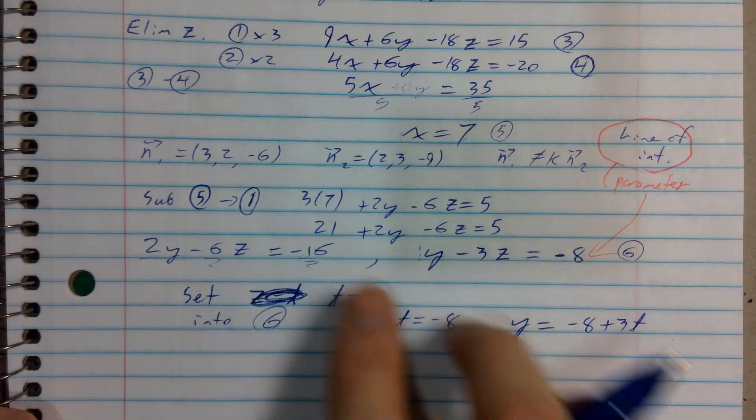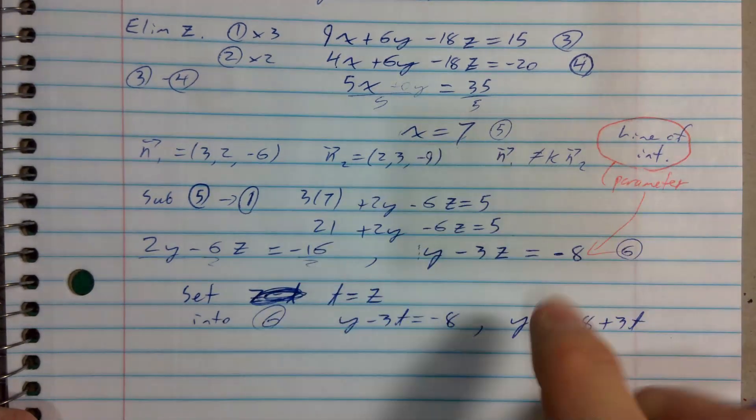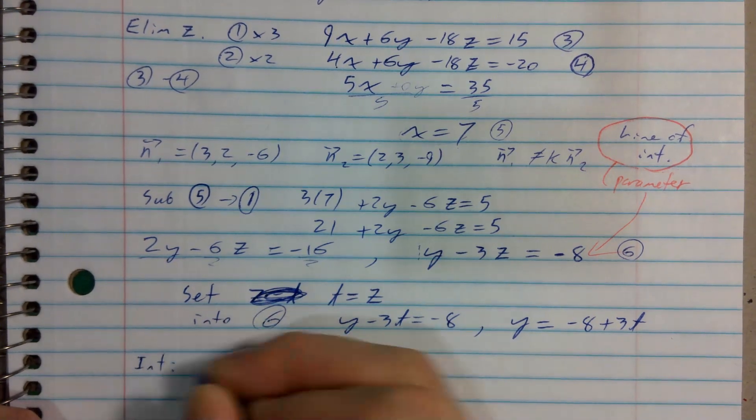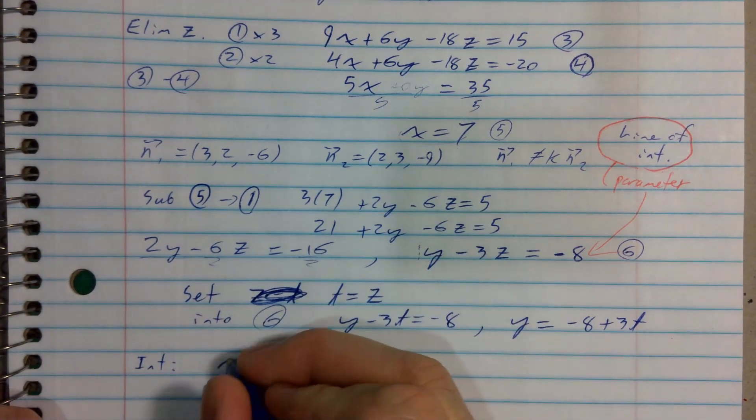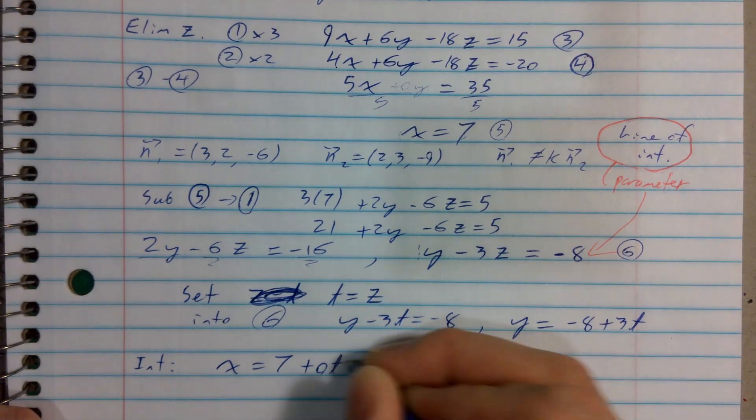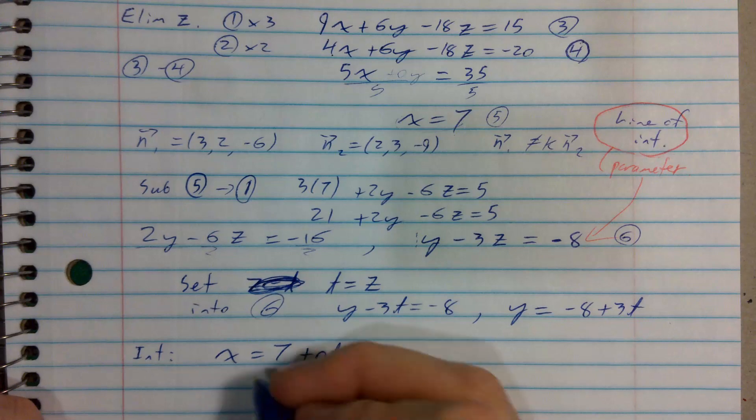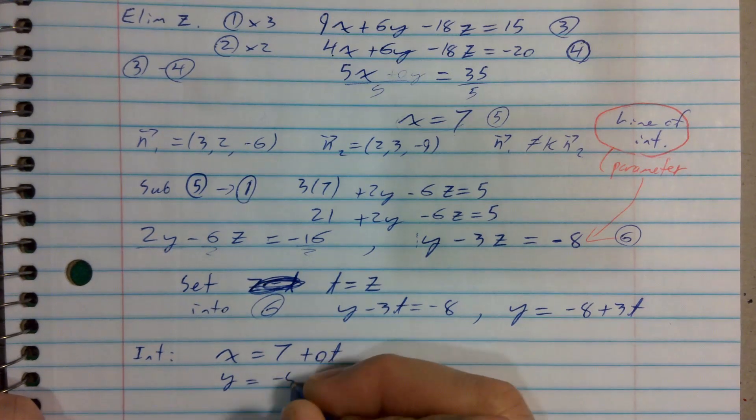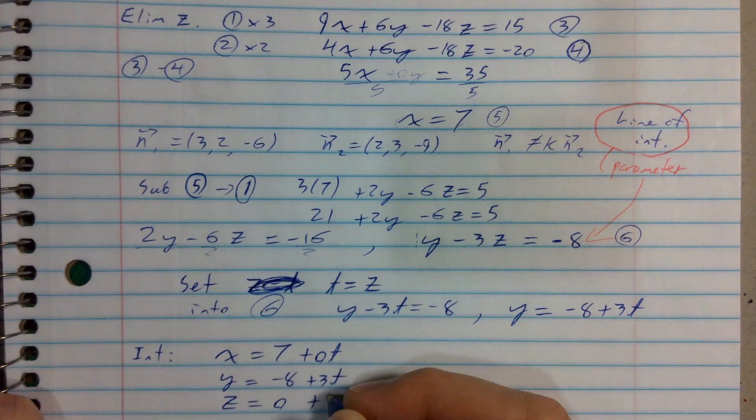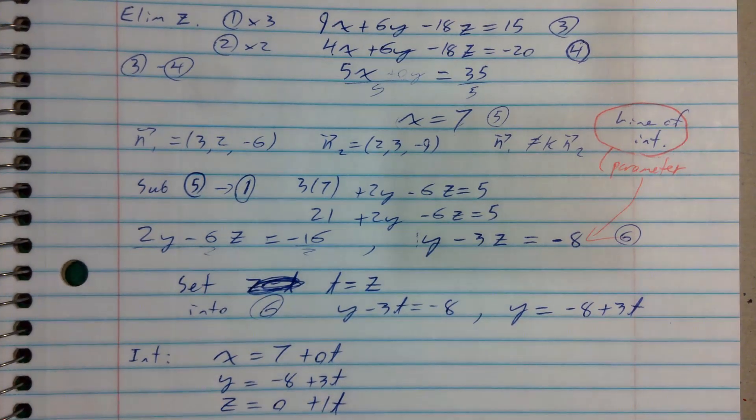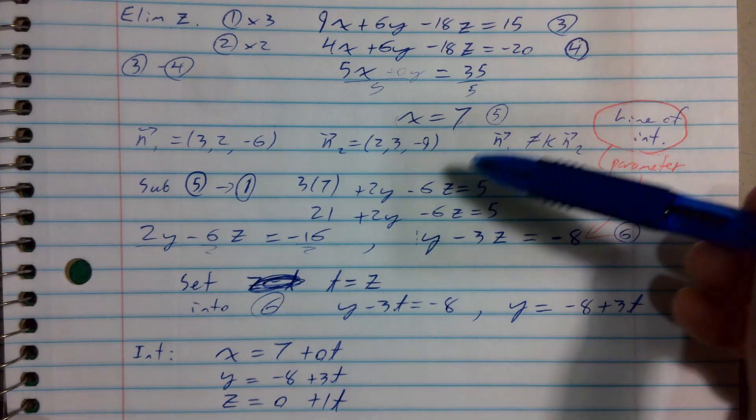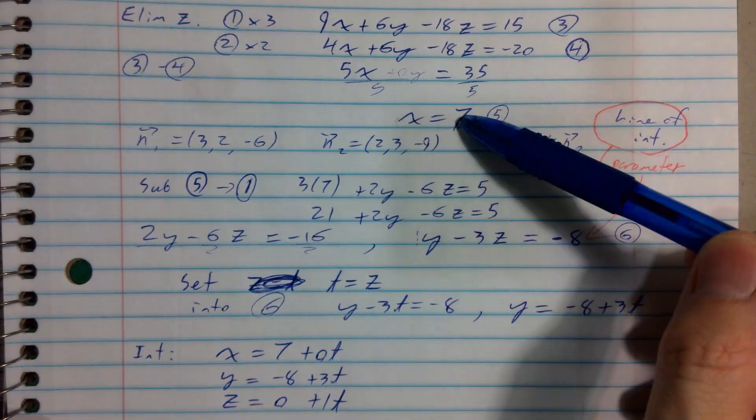And so here are my three parametric equations. They're a little bit separated. So let's say the intersection is given by these three parametric equations. x equals 7. Why don't we throw in a plus 0t right there? y is going to be negative 8 plus 3t. And z is going to be 0 plus 1t.